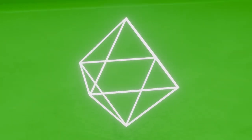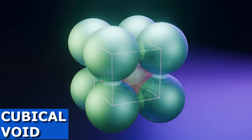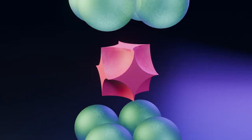An octahedron is formed by aligning two tetrahedrons on top of each other. A cubical void is formed between eight spheres aligned exactly on top of each other.